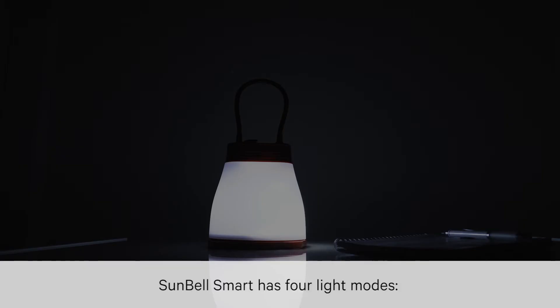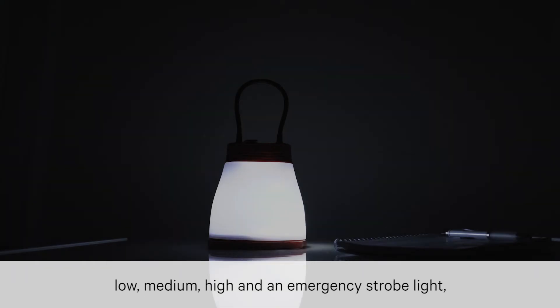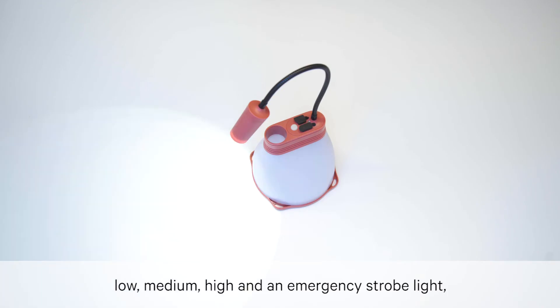Sunbell Smart has four light modes: low, medium, high and an emergency strobe light, giving you up to 110 hours on a single charge.